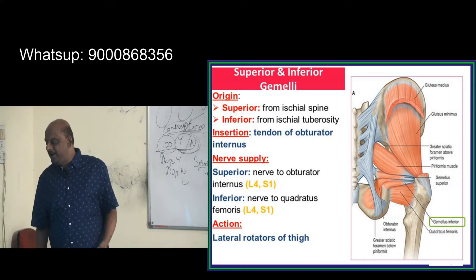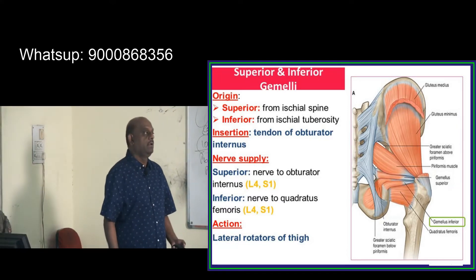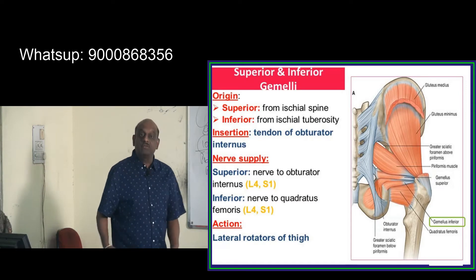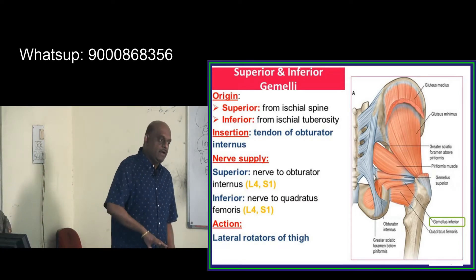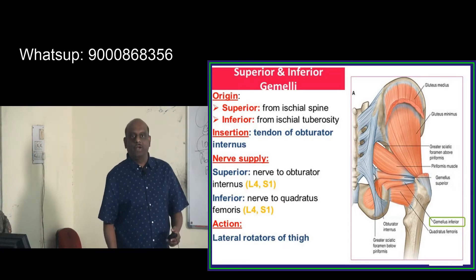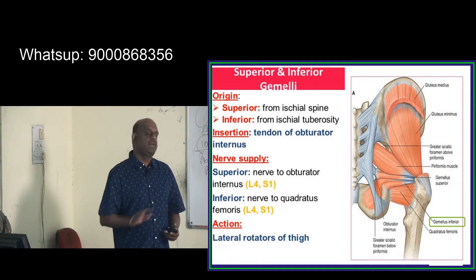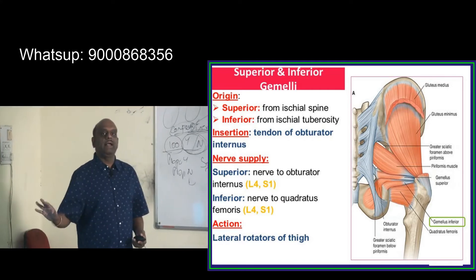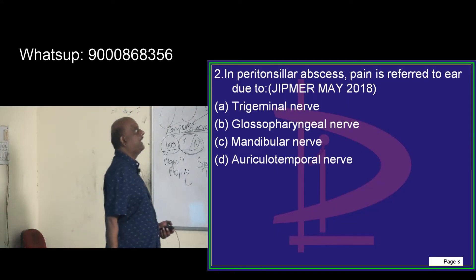If you look at the gemelis, typically they are the lateral rotators of the thigh — that is what you need to remember. In the next PG exam you are going to get a question: what are the various muscles which are lateral rotators, medial rotators, flexors, extensors — everything. Muscle action is a favorite question of the examiner.